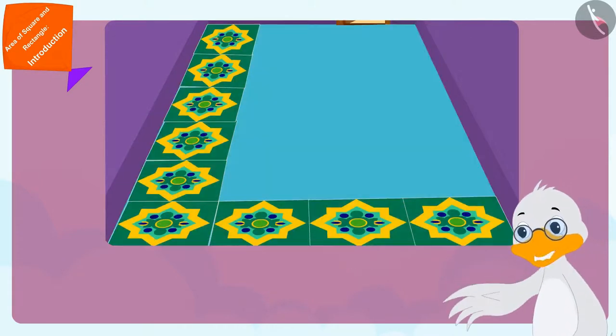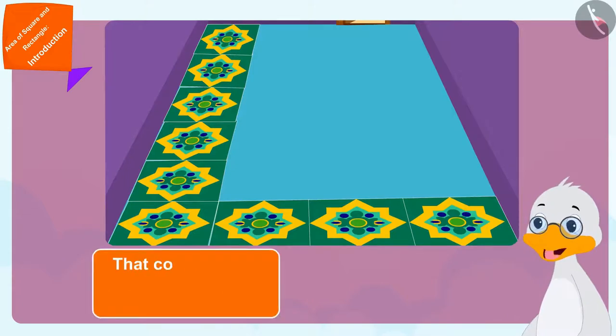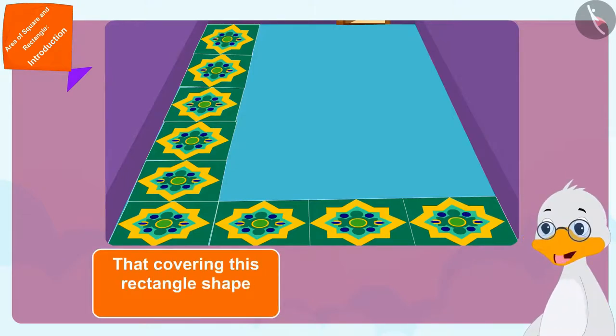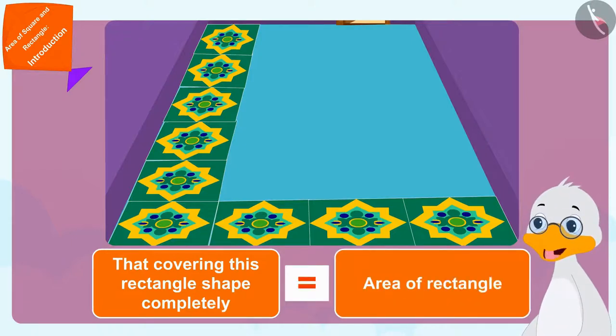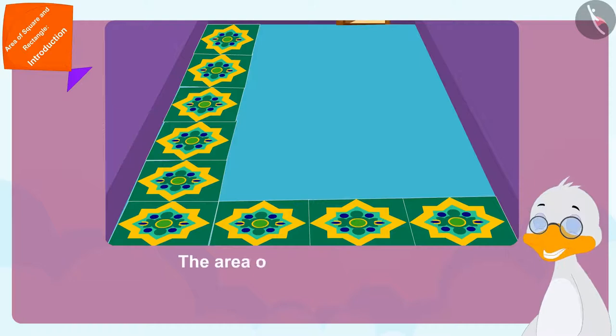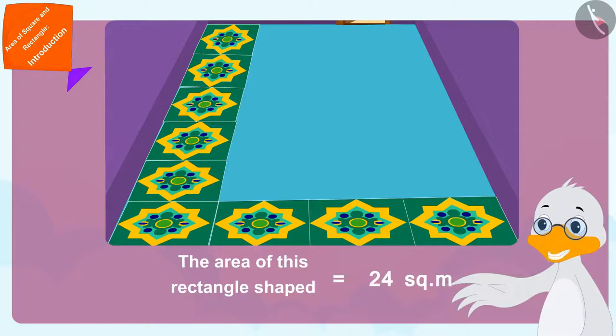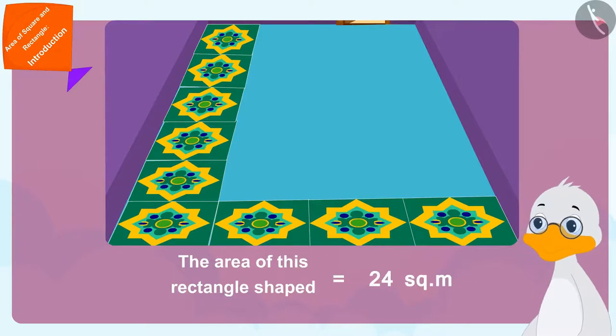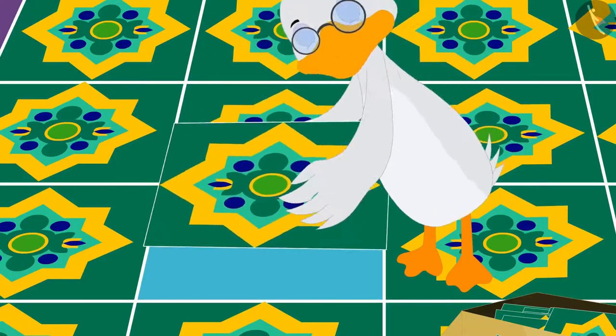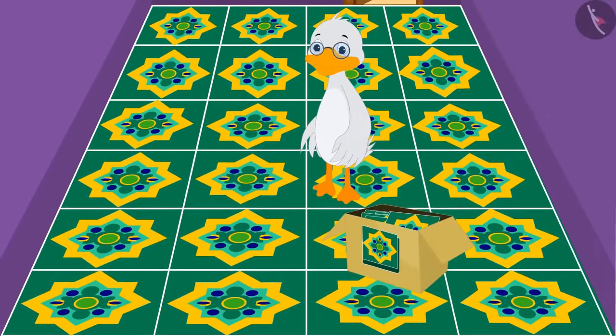And the fun part is that covering this rectangle shape completely will be equal to its area. This means the area of this rectangle shaped floor is twenty-four square meters. Uncle finished laying the tiles on his floor.